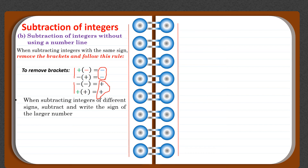After removing the brackets, you then add or subtract. When subtracting integers of different signs, subtract and write the sign of the larger number — but remember, do this after removing the brackets. Example: minus seven minus minus three. Minus minus becomes plus, so we get minus seven plus three. The signs are now different; we subtract seven minus three to get four, and write the sign of the larger number — seven — which is minus. So the answer is minus four.